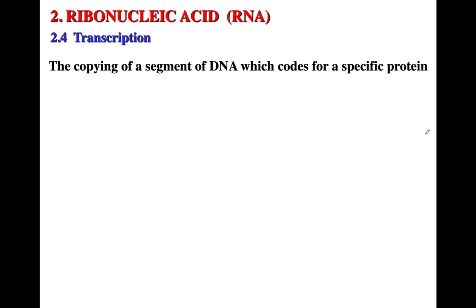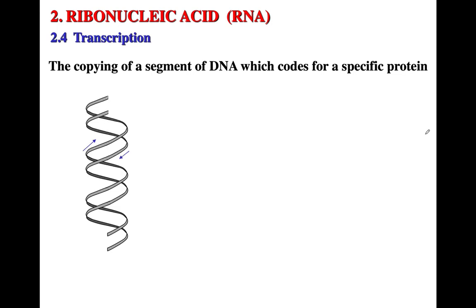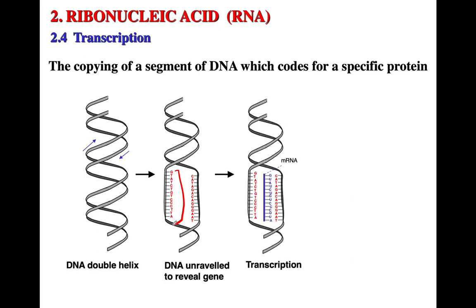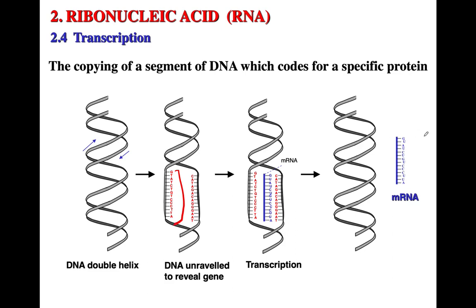When we talk about transcription, we're talking about taking DNA and copying a segment — called a gene — that codes for a specific protein. DNA is unraveled to reveal that gene, which is then converted to messenger RNA through the process of transcription. That messenger RNA is then taken to the site of protein synthesis, where transfer RNA comes in with amino acids and binds to the messenger RNA based on its codons.